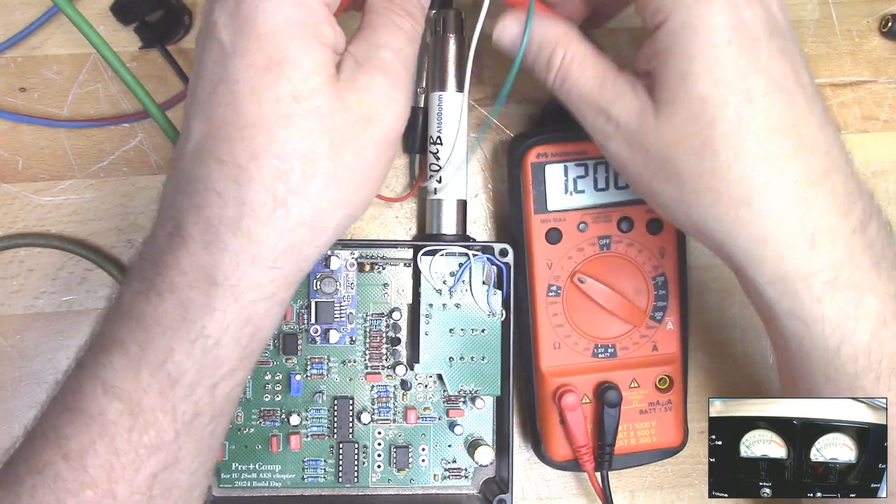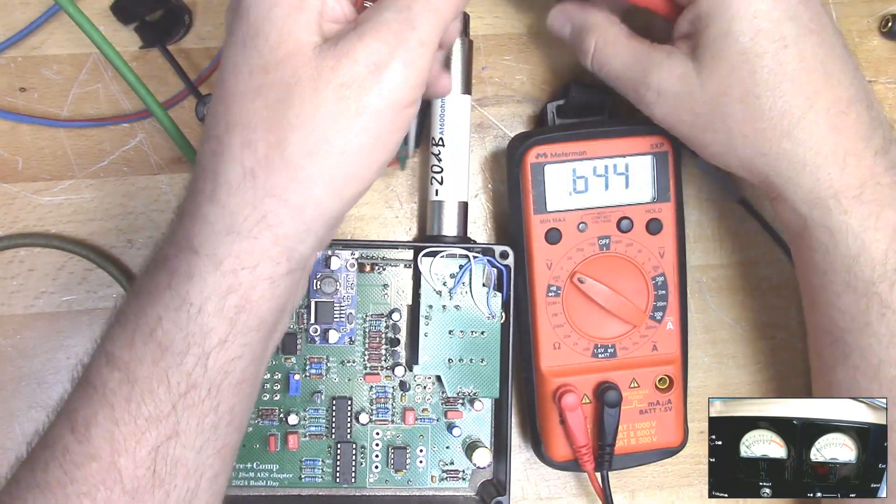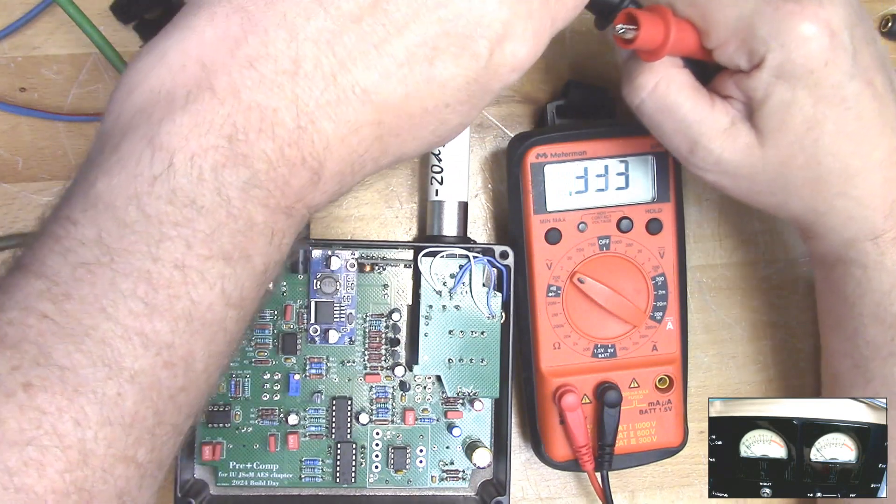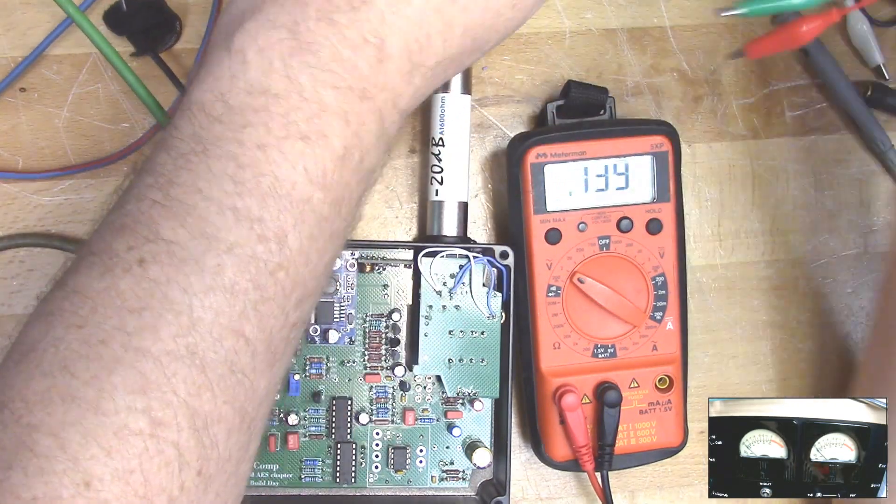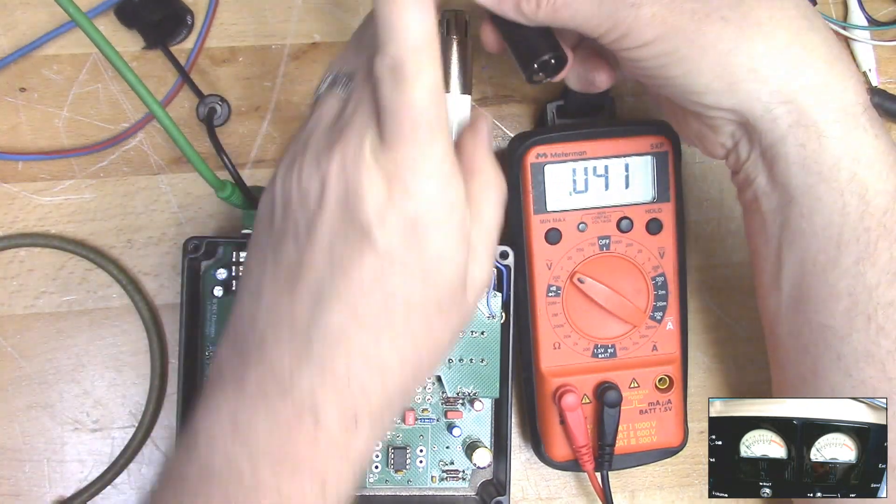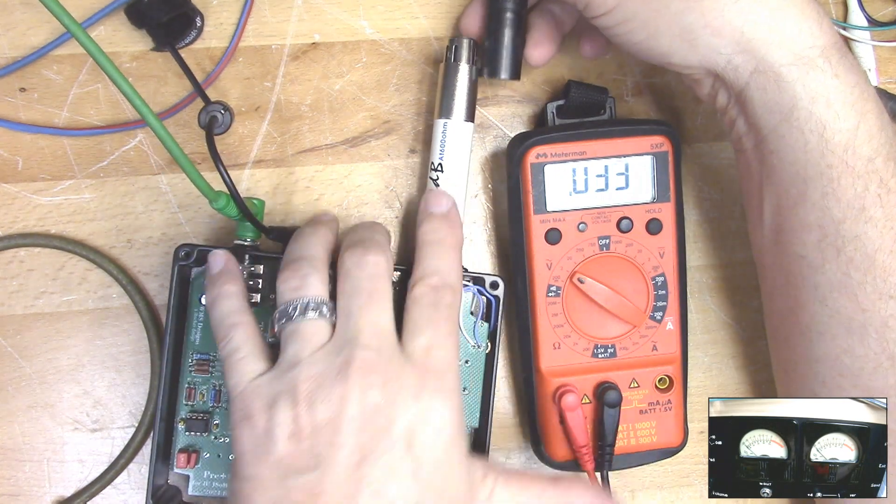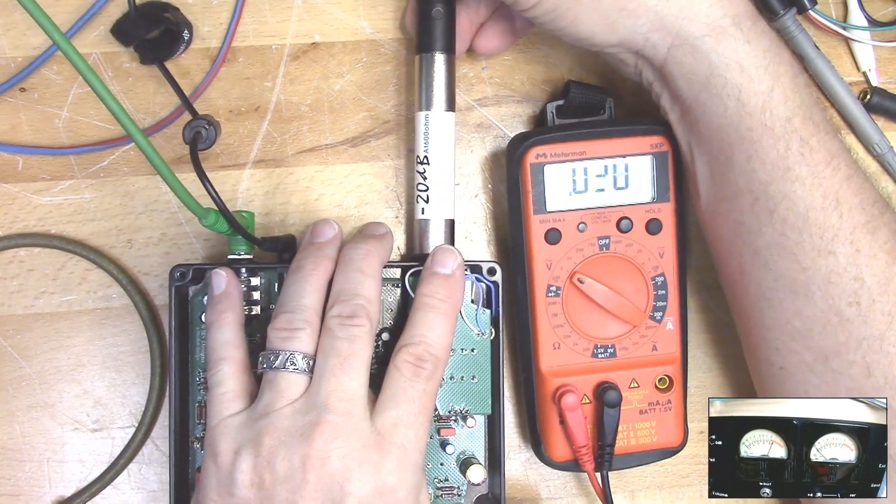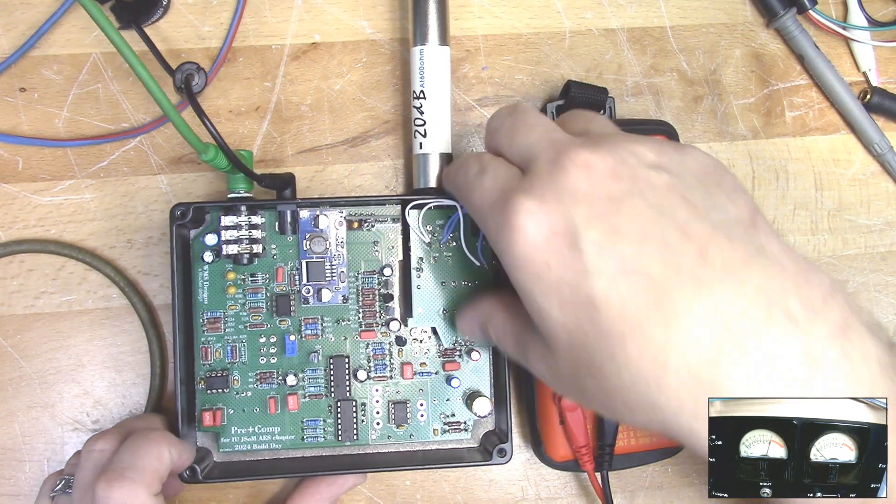So now I know the signal going in is the level I want. That goes into the 20 dB pad that's included with your kit into the input of your pre-amplifier compressor.